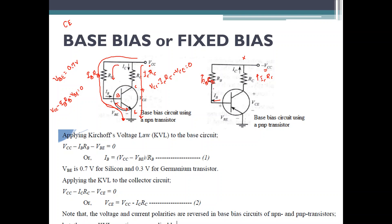In case of a PNP transistor, the polarities are reversed. This is one of the ways in which you can turn on the transistor. Turning on a transistor means making the current flow from collector to emitter. You can use two resistors between the base and collector, take one voltage source, and make the respective current flow from collector to emitter. This is what is called base bias or fixed bias. Thank you.